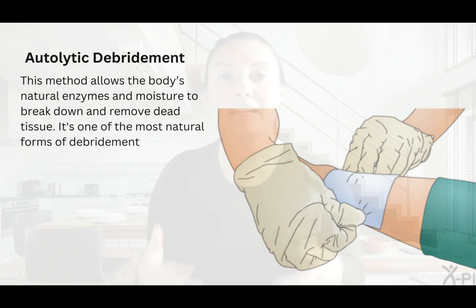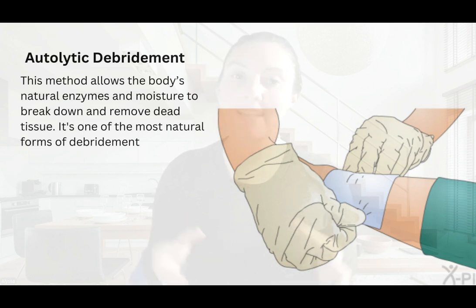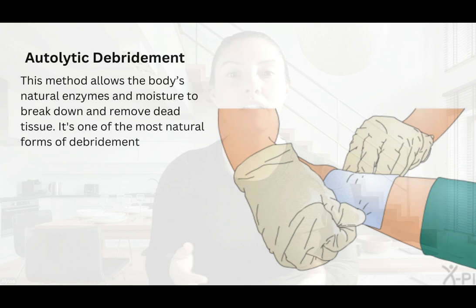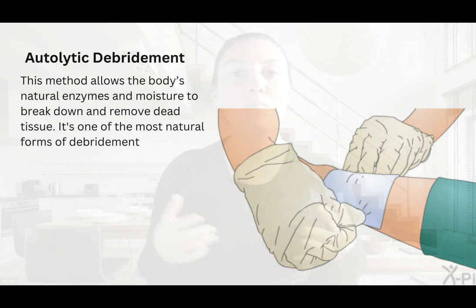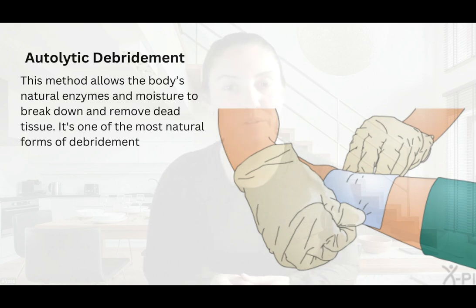First up, we have autolytic debridement. This method allows the body's natural enzymes and moisture to break down and remove dead tissue. It's one of the most natural forms of debridement, and it typically involves covering the wound with a moisture-retentive dressing like a hydrocolloid or hydrogel. Autolytic debridement is ideal for patients with less severe wounds and is a more comfortable option since it doesn't require specialized tools. However, it does take time, so it's best suited for chronic wounds.